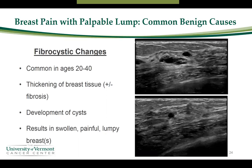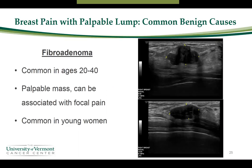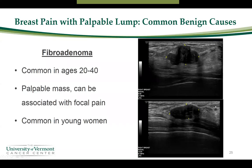Another common benign cause of a palpable lump that may be associated with breast pain is a fibroadenoma, a very common finding in women aged 20 to 40. On ultrasound, this mass appears gently lobulated and solid inside — without fluid like a cyst — and is well circumscribed, often very close to the skin surface. These masses are mobile within the breast; sometimes people call them 'breast mice' because they can roll around. Fibroadenomas are benign and there is no association between fibroadenomas and breast cancer.